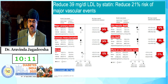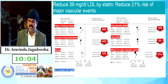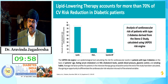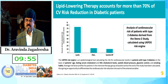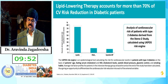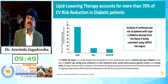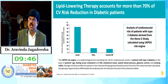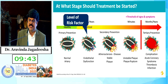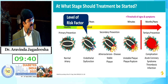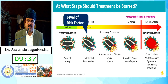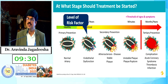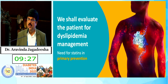By just reducing LDL by 39 mg/dL with a statin, it reduces the risk of major vascular events by 21 percent — 24 percent reduction in major coronary events, 24 percent in coronary revascularization, 15 percent in stroke, 12 percent in vascular death, and 9 percent in all-cause death. Analysis from the Steno-2 study confirms that reduction in lipids as early as possible provides long-term benefit. Statins can be used in primary, secondary, and tertiary prevention.